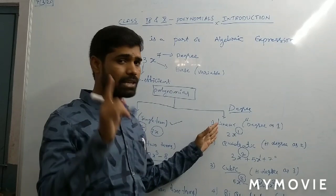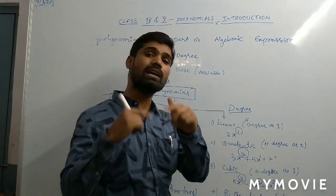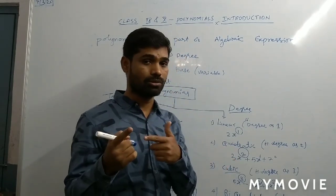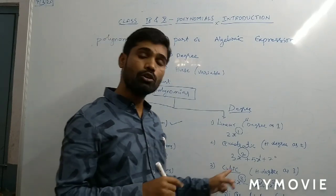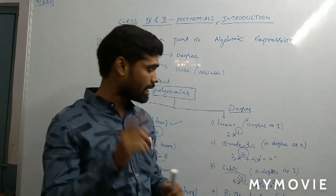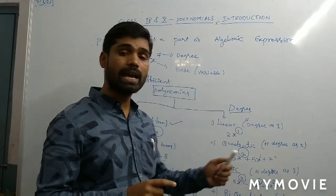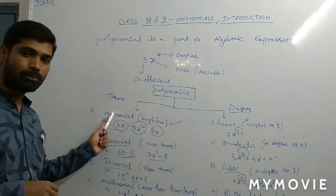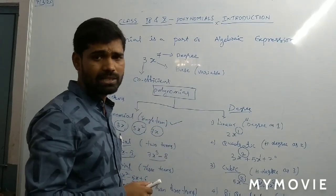So, a linear polynomial has only one zero. A quadratic polynomial has two zeros. Zeros depend on the degree. Cubic polynomial will have three zeros because the highest degree is three. Then bi-quadratic polynomial has four zeros, which has the highest degree as four. I hope you have understood, based on the terms and based on the degree, what polynomials we have.